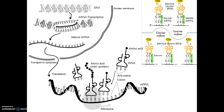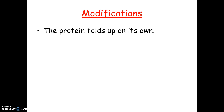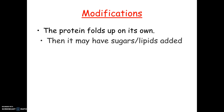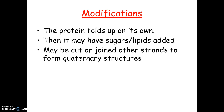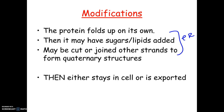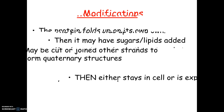This picture summarizes everything: in the nucleus you have transcription, and outside you have translation. This exact picture will be used on your test for matching, so you should screenshot it from the PowerPoint. Once the protein is made, it folds up on its own because of R groups — each amino acid has an R group, and R groups react with each other to make tertiary structures. The protein can also get modified by becoming a glycoprotein or lipoprotein, get cut, or be joined with other strands — all happening in the ER or Golgi body. Then the protein either stays in the cell or gets exported.